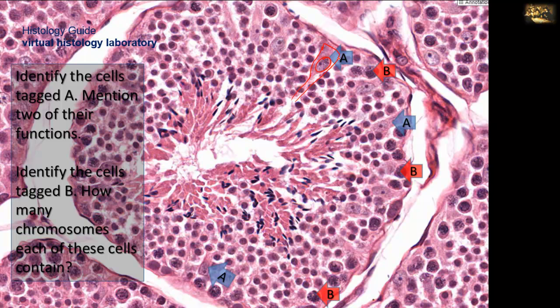So Sertoli cell is A; B is a spermatogonium. The spermatogonia contain the complete number of chromosomes and multiply by mitosis, forming other spermatogonia or a primary spermatocyte that will enter meiotic division. These spermatogonia contain the full complement of chromosomes.